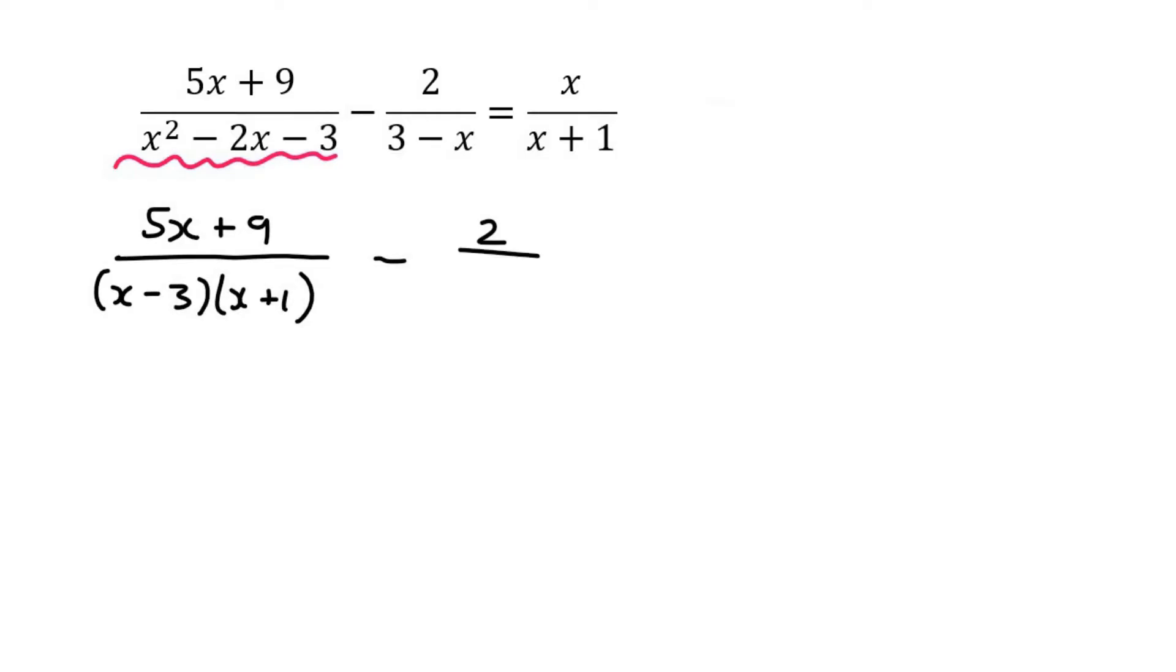Then I'm just going to write out the rest. Okay, now x plus 1 is the same as x plus 1, but 3 minus x is not the same as x minus 3. So we need to switch one of them. I always choose the easiest one to switch, like the smallest one.